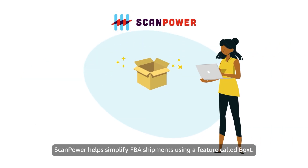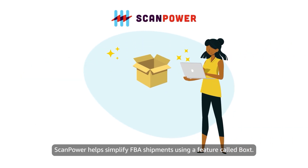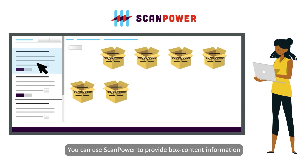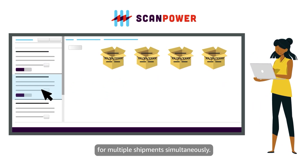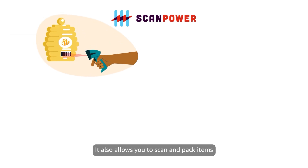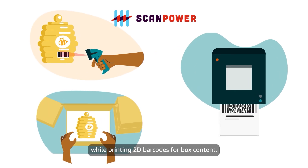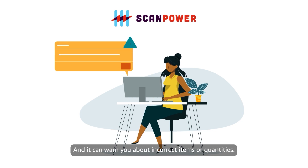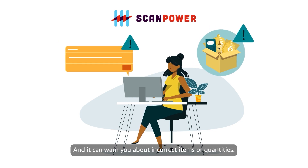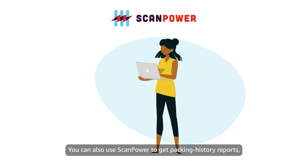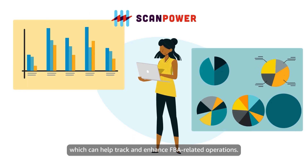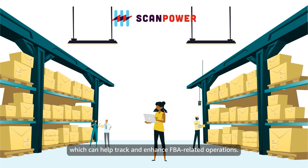ScanPower helps simplify FBA shipments using a feature called BoxT. You can use ScanPower to provide box content information for multiple shipments simultaneously. It also allows you to scan and pack items while printing 2D barcodes for box content, and it can warn you about incorrect items or quantities. You can also use ScanPower to get packing history reports, which can help track and enhance FBA-related operations.